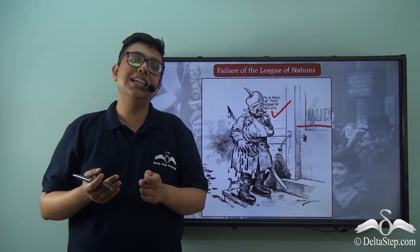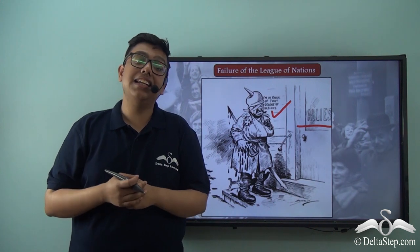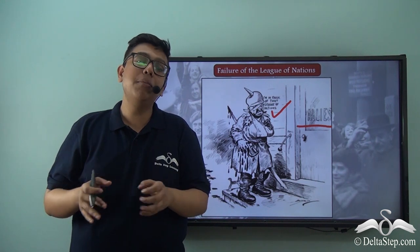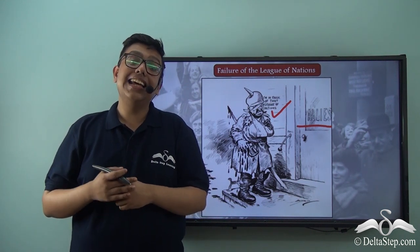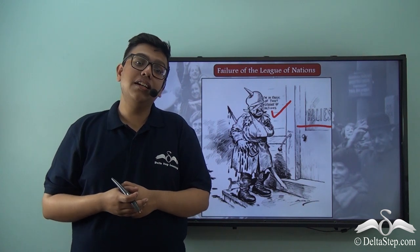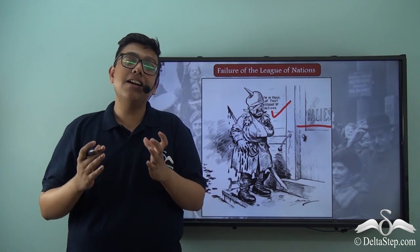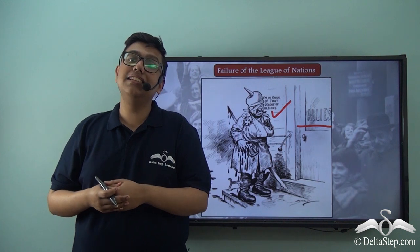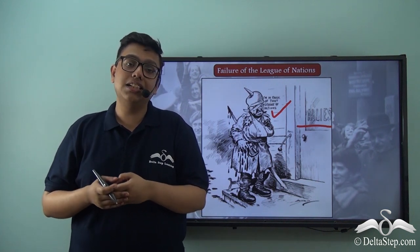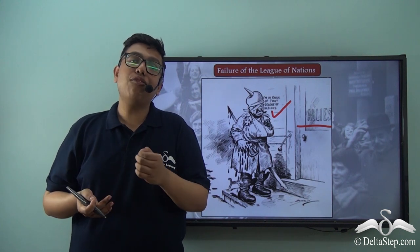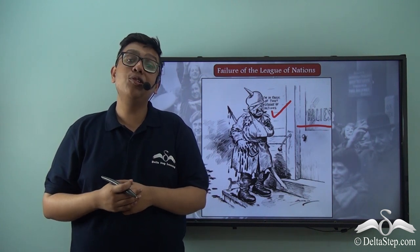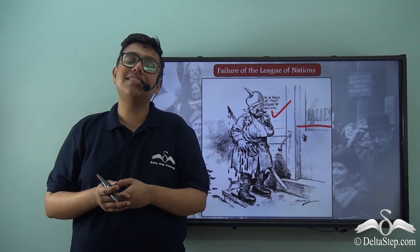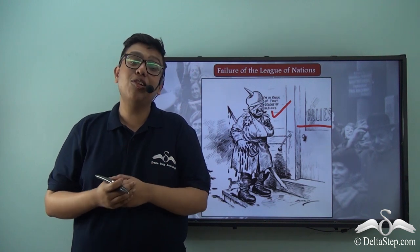Germany was finally allowed to join the League of Nations quite later, around 1928, by which time it was already too late as Nazism had taken a firm grip in Germany. Nazism in Germany would soon cause an aggressive expansionist rage where Germany would take up invasions and aggressions totally against the mandate of the League of Nations. Hitler, the leader of Nazi Germany, would repeatedly defy the League's mandate and very soon went on to quit the League itself, showing the world that the League was a functionless and useless body as it could not stop Hitler in his tracks.